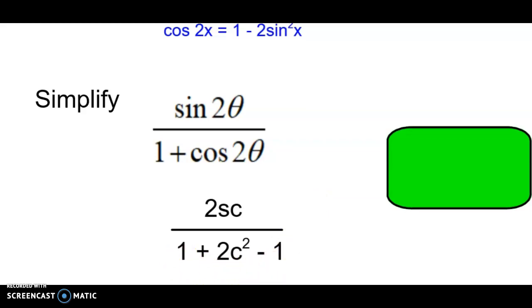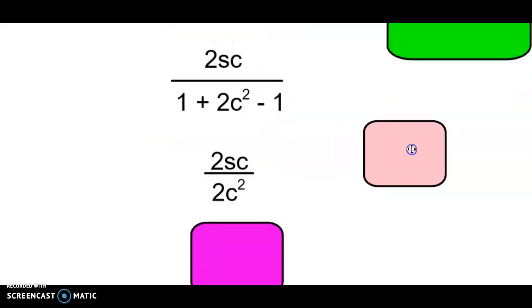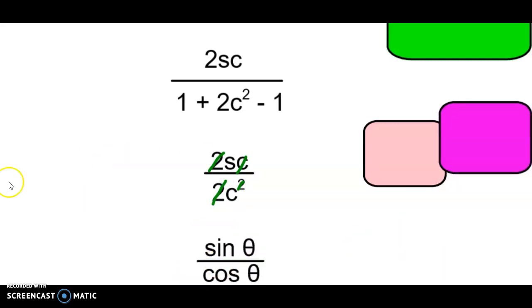After the ones cancel, we can reduce the fraction — cancel a cosine from the top and bottom, and cancel the twos. That leaves us with sine over cosine, and sine over cosine equals tangent.